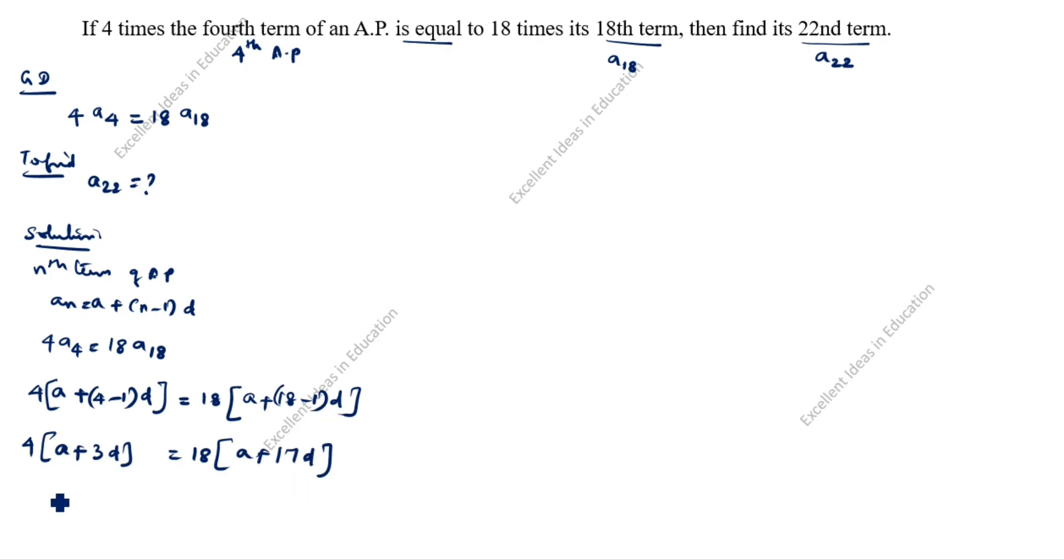Next, we will multiply inside the bracket. 4 into a is 4a plus 4 into 3d is 12d equal to 18 into a is 18a plus 18 into 17d is 306d.